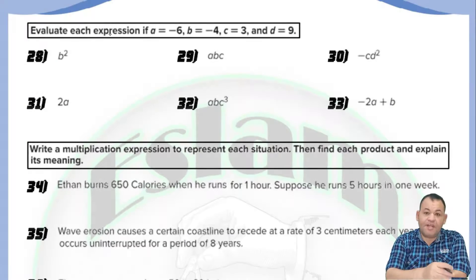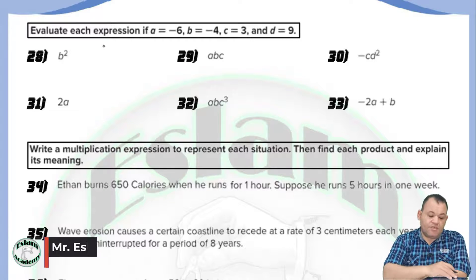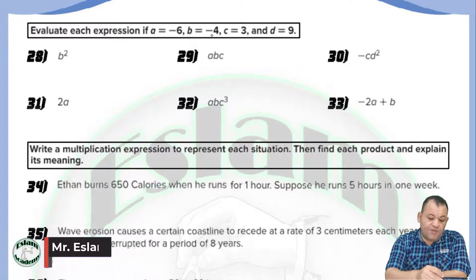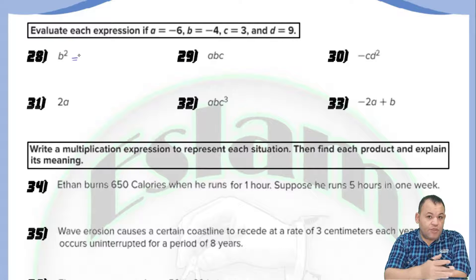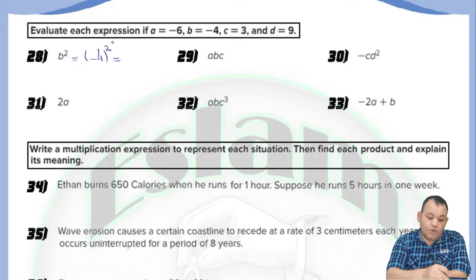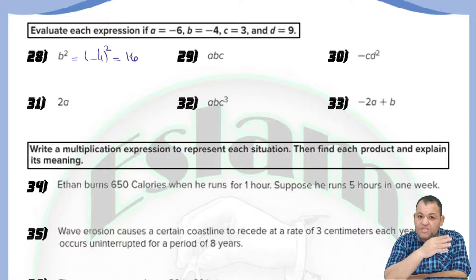In this part of the lesson, we will evaluate each expression given that a equals negative 6, b equals negative 4, c equals 3, and d equals 9. For question number 20, we need to find b to the power 2. Since b equals negative 4, write it inside the bracket: negative 4 to the power 2. The number inside the bracket is negative and the power is even, so the answer will be positive. We can also say negative 4 times negative 4 — the two numbers have the same sign, so the answer is positive. 4 times 4 equals 16.